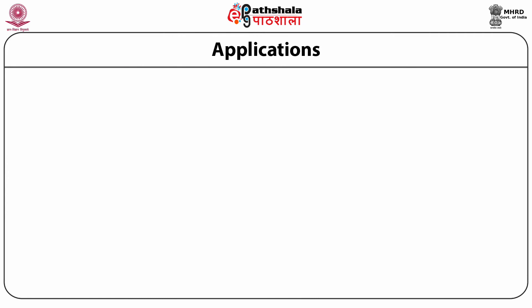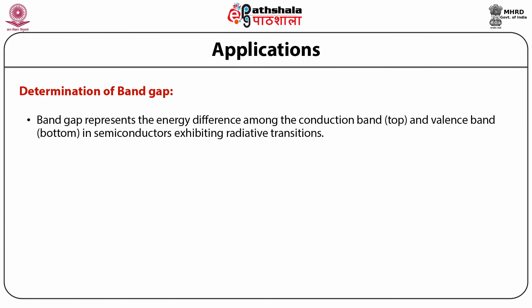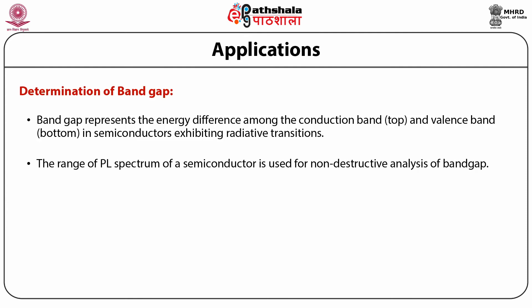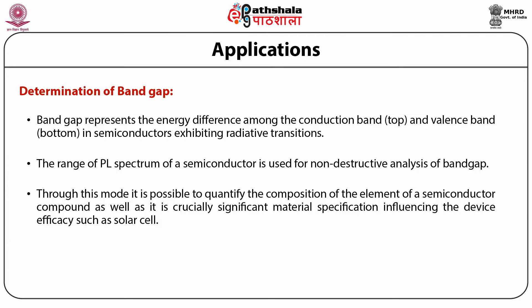We will now discuss the applications of photoluminescence. The first application is the determination of band gaps. Band gap represents the energy difference between the conduction band top and the valence band bottom in semiconductors exhibiting radiative recombination transitions. The range of the photoluminescent spectrum of a semiconductor is used for non-destructive analysis of band gap. Through this mode, it is possible to quantify the elemental composition of a semiconductor compound and material specifications influencing device applications such as solar cells.